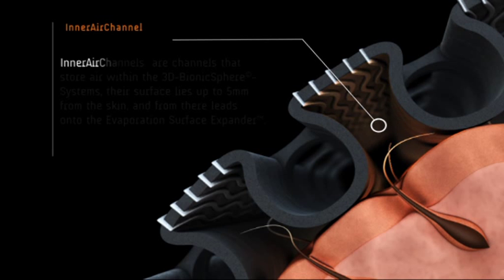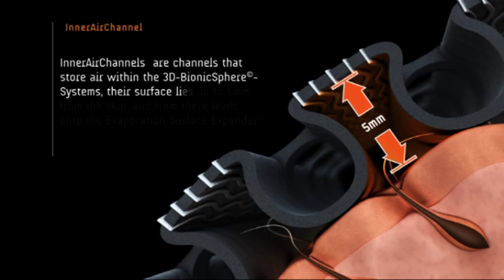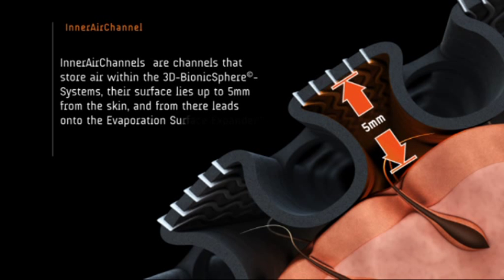The inner air channels are channels that store air within the 3D Bionic Sphere system. Their surface lies up to 5mm from the skin and they lead on to the evaporation surface expander.